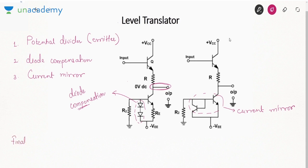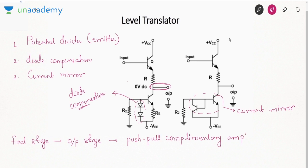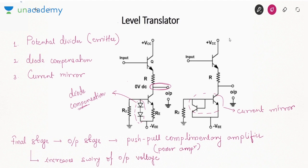The final stage is the output stage — a push-pull complementary amplifier. This has not been studied yet as it is a part of power amplifiers, which is not in the GATE syllabus. Its purpose is to increase the swing of the output voltage — the maximum value that the output voltage can have — allowing higher-level voltages to be achieved.